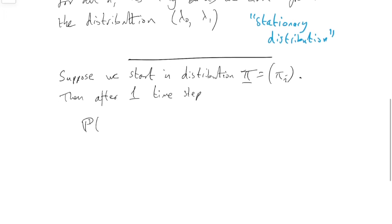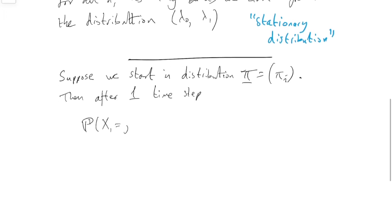Well, probability that x1 equals j, say, is, well we'll condition over where we started. Right? So, sum over i, and we started in i with probability pi i, then to get to j would have had to have had probability p, would have had to have moved there with probability pij. So, that's the distribution after one step.